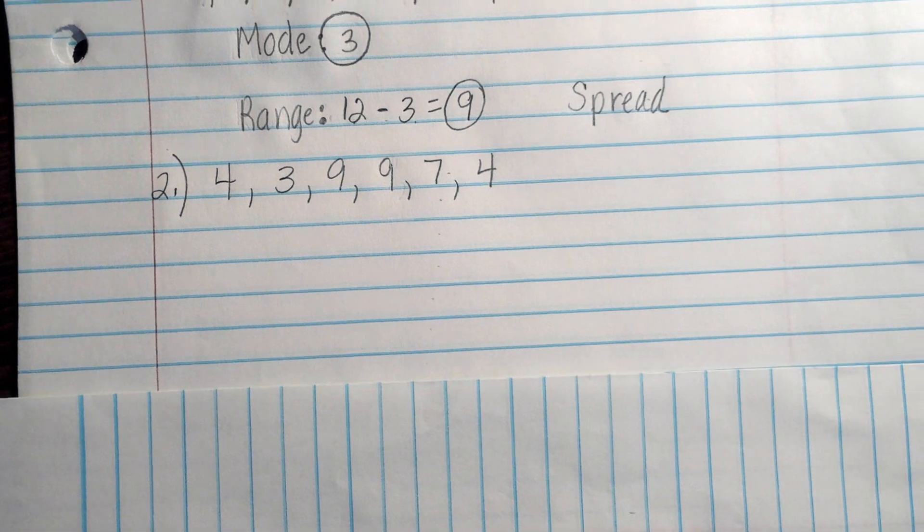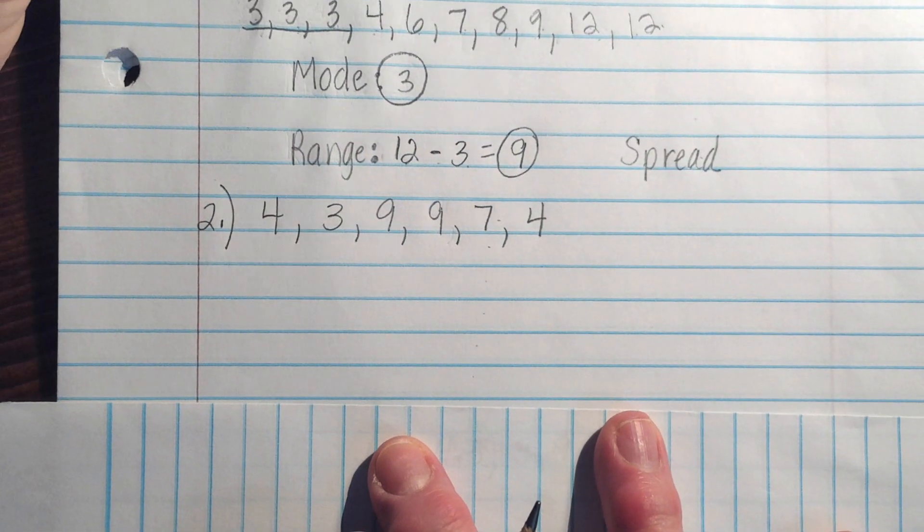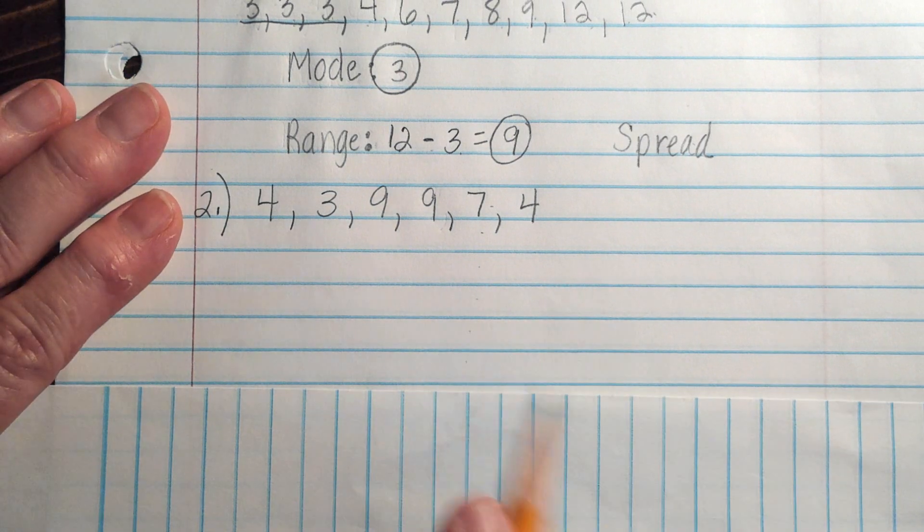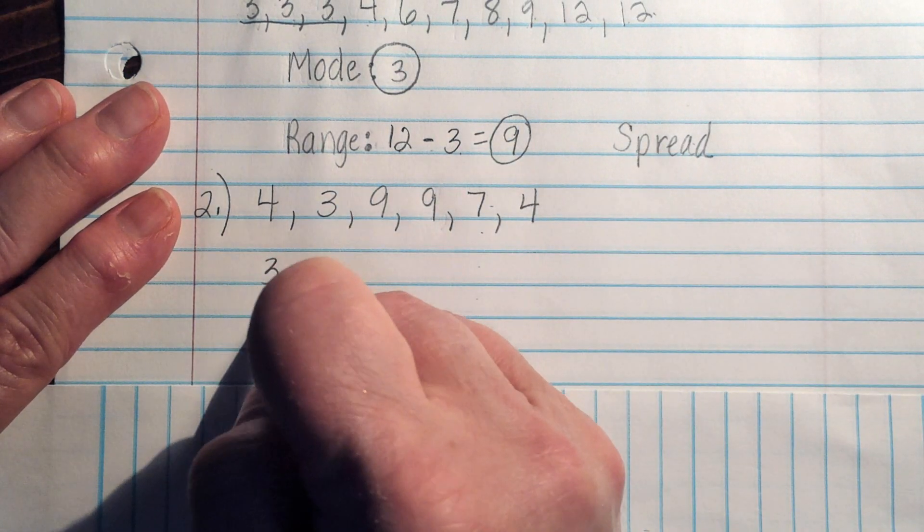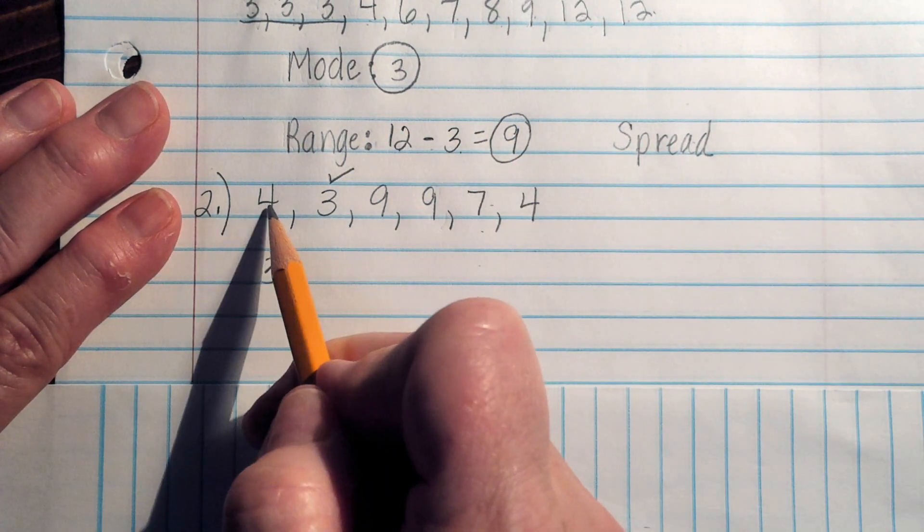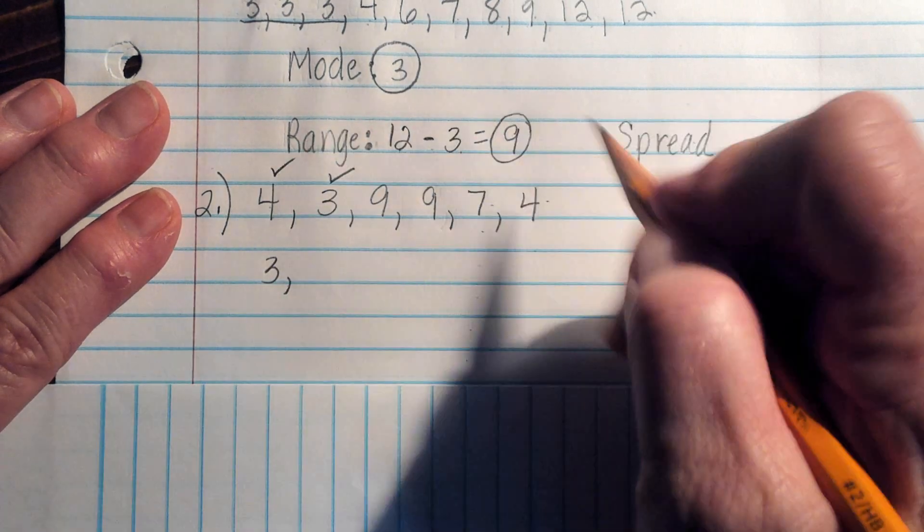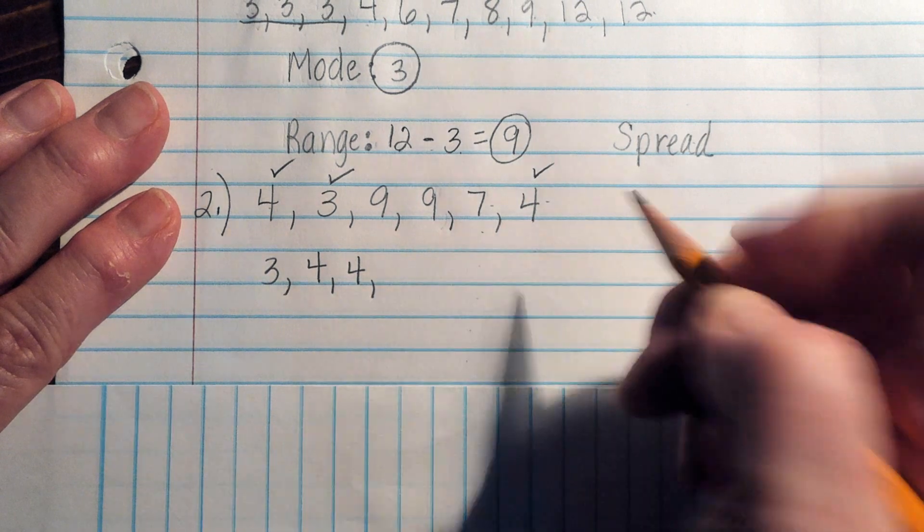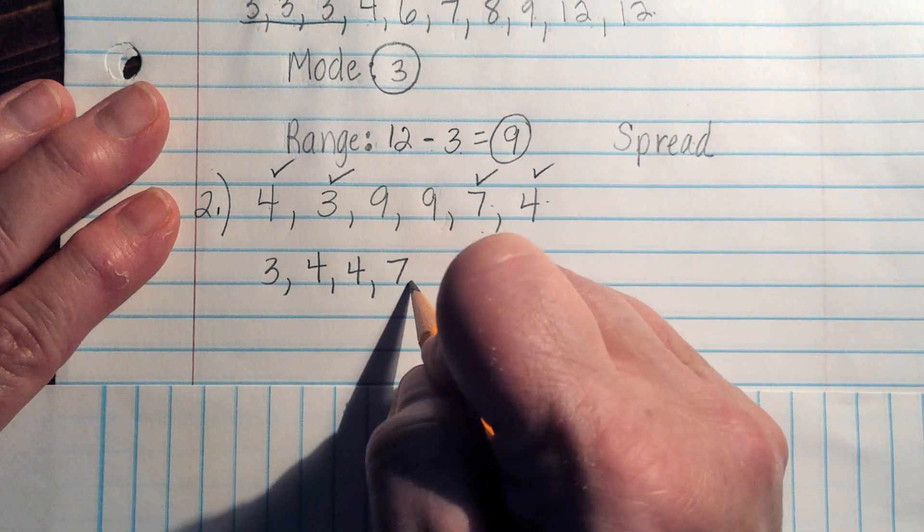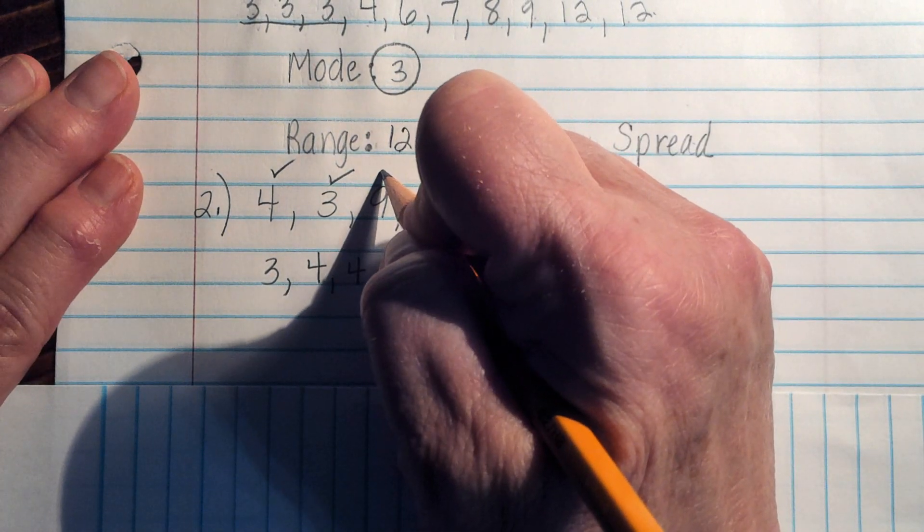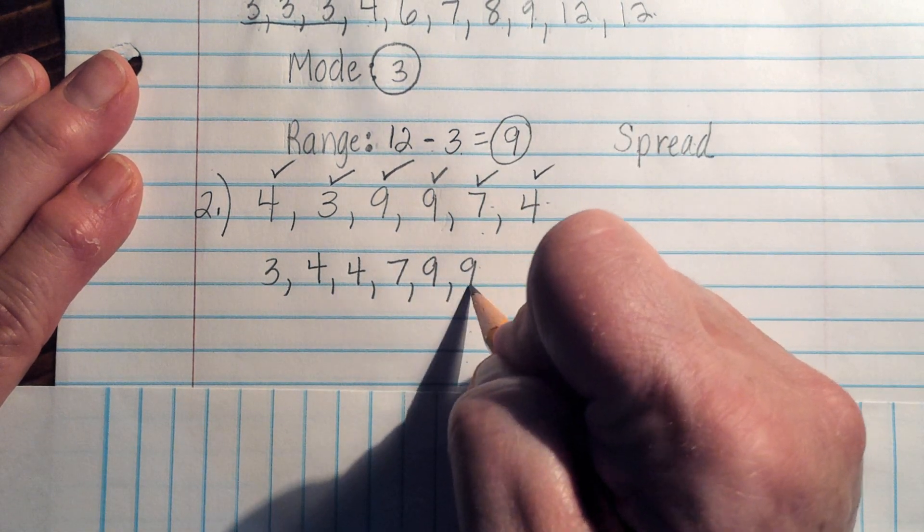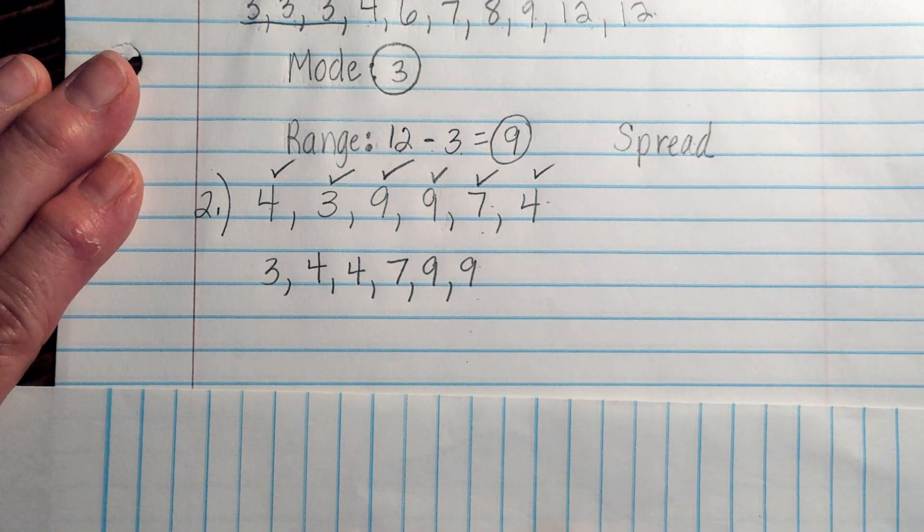Okay, next set of numbers. Let's go down and look at our next set of numbers. Again, I'm going to do the same thing. I want to rewrite them in order, least to greatest. I see I have three. I have a four here and a four here. We have a seven. And we've got a nine here and a nine here.